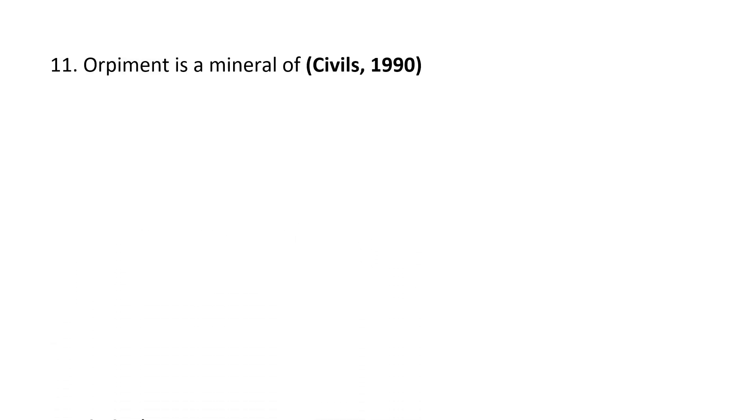Next question. Orpiment is a mineral of: A. Antimony, B. Molybdenum, C. Arsenic, D. Gallium. Orpiment is a mineral of arsenic.